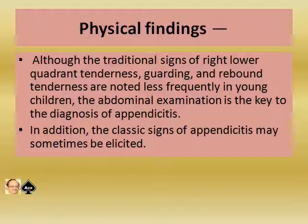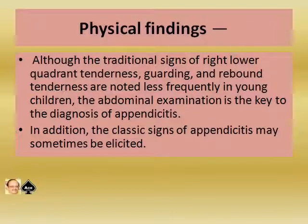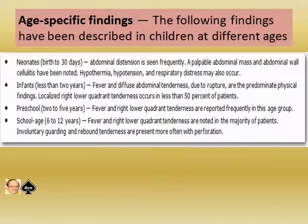Now let us go to the physical examination findings. Although the traditional signs of right lower quadrant tenderness, guarding, and rebound tenderness are noted less frequently in young children, the abdominal examination is the key to the diagnosis of appendicitis. In addition, the classic signs of appendicitis may sometimes be elicited.